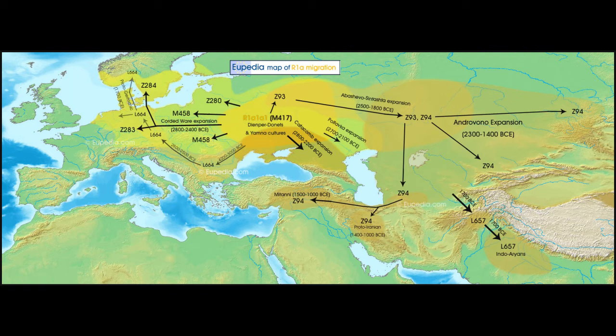Those are the eastern branches — the Iranians and the Indians. There's also an expansion towards the Caucasus, the Catacomb culture, and the Boltafka expansion. Then we have the European clades: Z93 moves north, Z280 moves into the Baltic region, and then we have the two Slavic clades — M458 and Z283 — moving west into the Slavic territories and onto the border of what would become the Germanic territories.